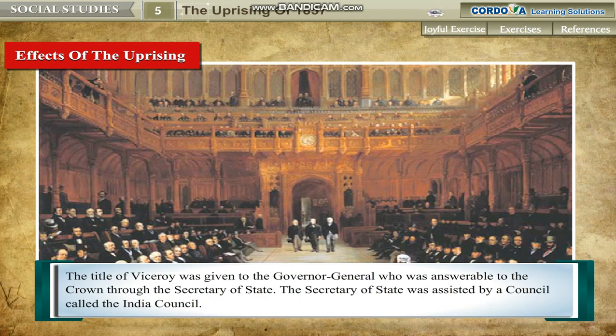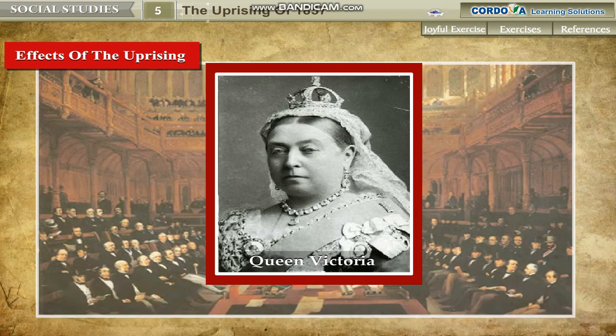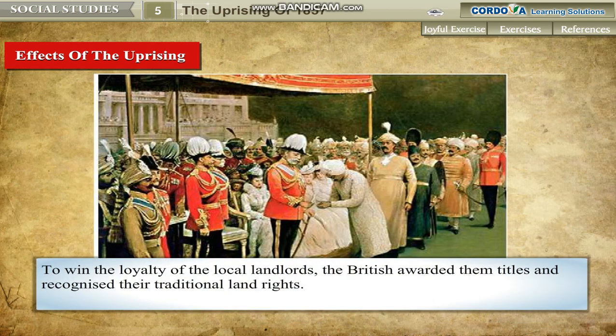The Secretary of State was assisted by a council called the Indian Council. In 1858, Queen Victoria issued a proclamation assuring the Indian princes that no further annexation would be made. They could pass on their kingdoms to heirs but had to accept British paramountcy. She also promised not to interfere in the social and religious customs and practices of the Indians. To win the loyalty of local landlords, the British awarded them titles and recognised their traditional land rights.